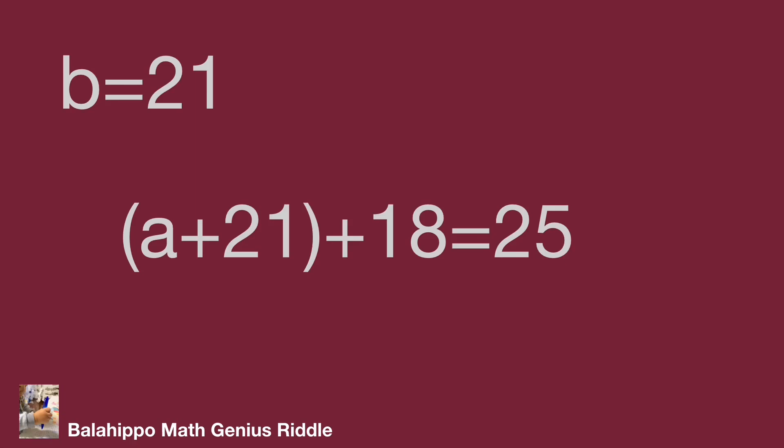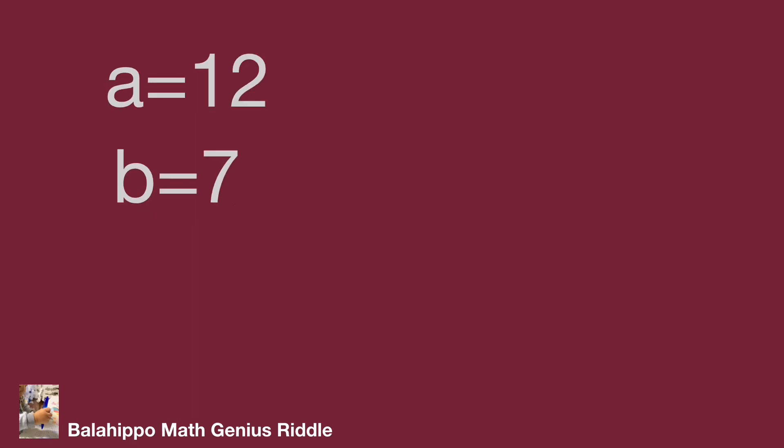So our answer is a equals 12 and b equals 7. Then we check our equation: 7 times 12 plus 13 times 7 equals 175. That's the answer. Do you got it? Hope you enjoyed the video. Thank you.